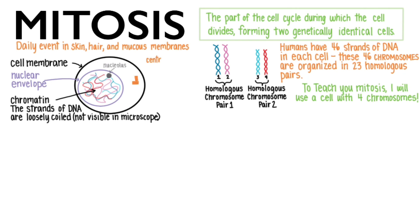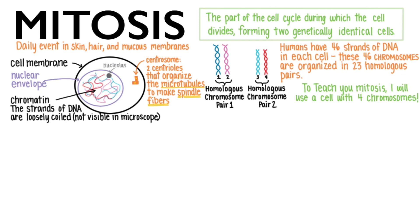And here is the centrosome. It's composed of two centrioles that organize the microtubules to make spindle fibers during the upcoming mitotic process. An important reminder is that spindle fibers are made of microtubules. Mitosis begins once all the DNA and all the other cell contents, including structures like the centrosome, have been replicated and all preparatory and appropriate interphase cell cycle checkpoints have occurred.